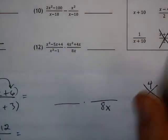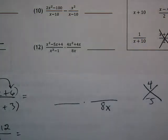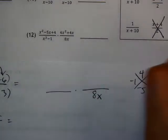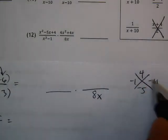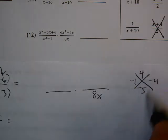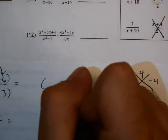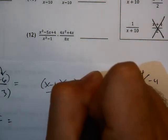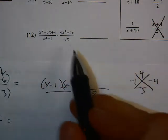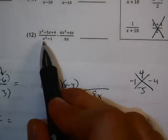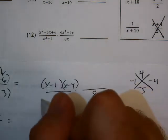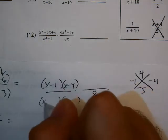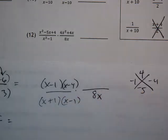If I look at this one first: Diamond, positive 4 on top, negative 5 on the bottom. Negative 1 and negative 4 work because they multiply to give me positive 4, and they add to give me negative 5. So now my two factors on top here are x minus 1 and x minus 4. On the bottom, x squared minus 1, this is the difference of two squares, which means this will be x plus 1 and x minus 1.